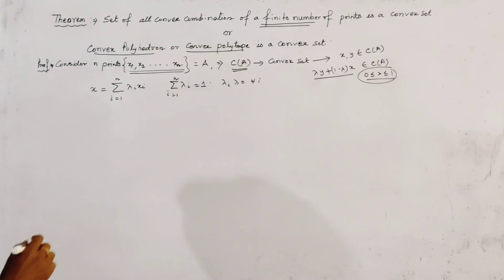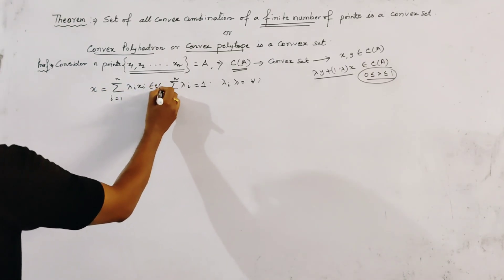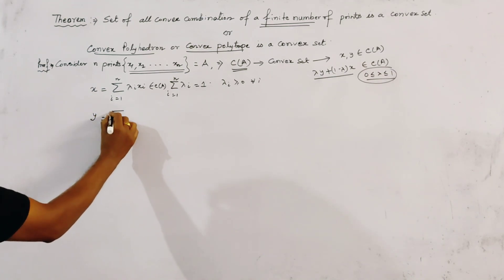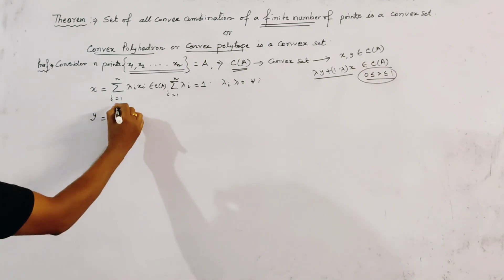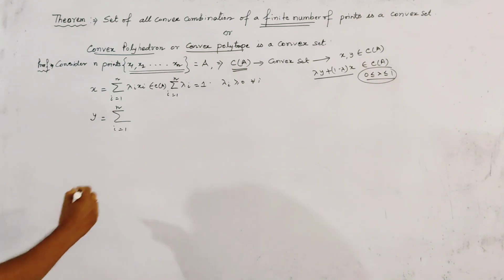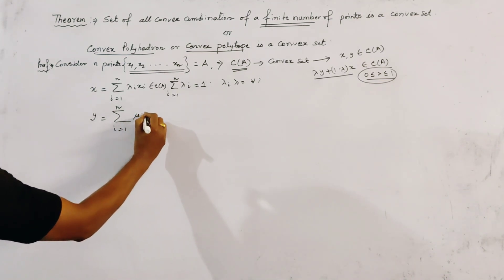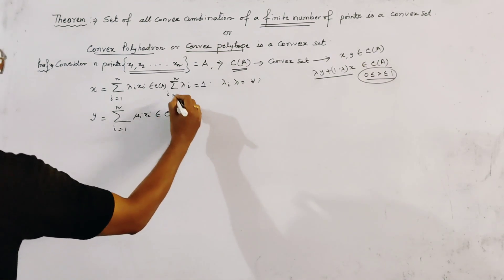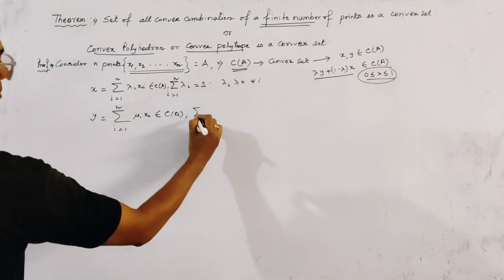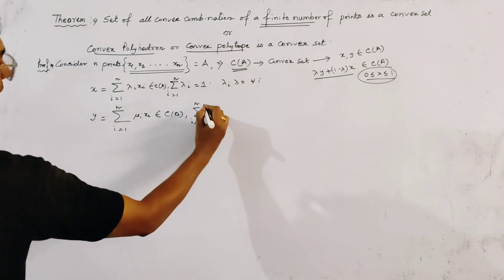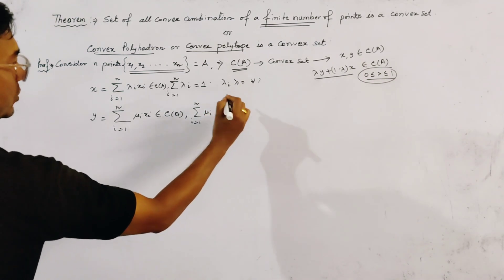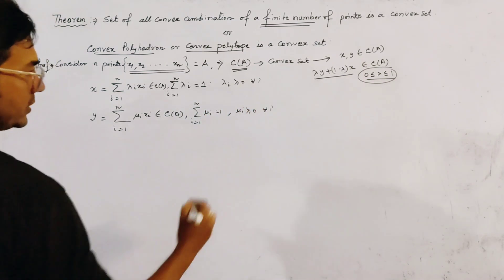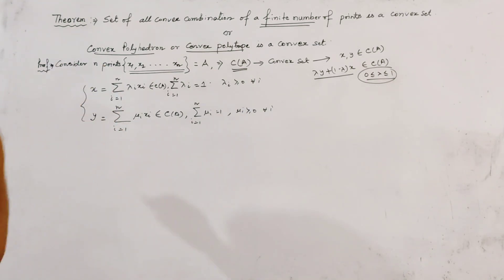This is the first point we take from C of A. We take the second point y equal to summation i = 1 to n of μᵢ xᵢ, which is another convex combination. Let it satisfy: summation of μᵢ = 1 and μᵢ ≥ 0 for all i. These are two points of C of A.